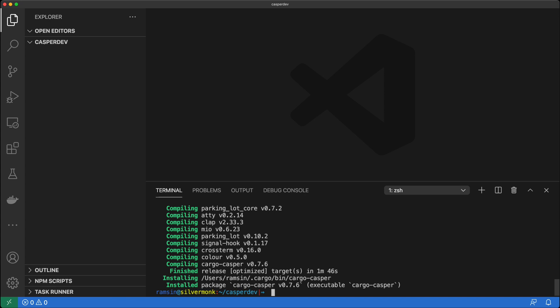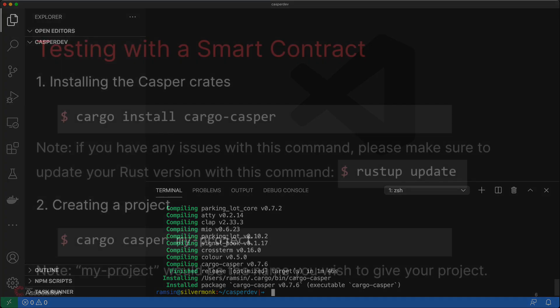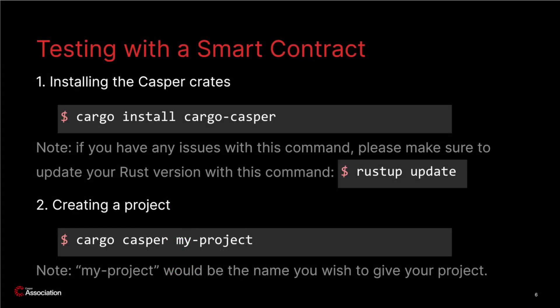This command may take a few minutes to execute, but we've used video editing to skip ahead to spare you the wait. Now that we have the Casper crates installed, it's very easy for us to create a project. For example, let's say I want to create a project named MyProject. You can choose a different name if you wish. Simply run the command: cargo casper MyProject.